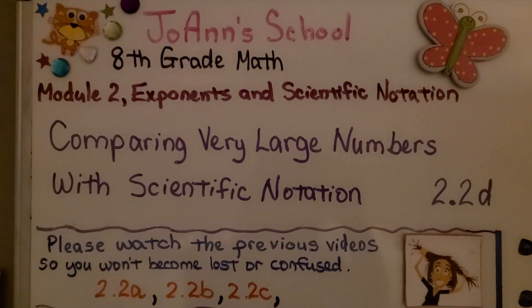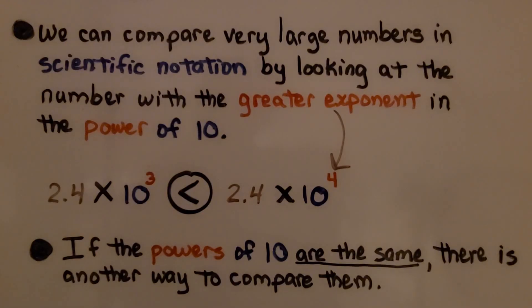Lesson 2.2d: Comparing Very Large Numbers with Scientific Notation. We can compare very large numbers in scientific notation by looking at the number with the greater exponent in the power of 10.